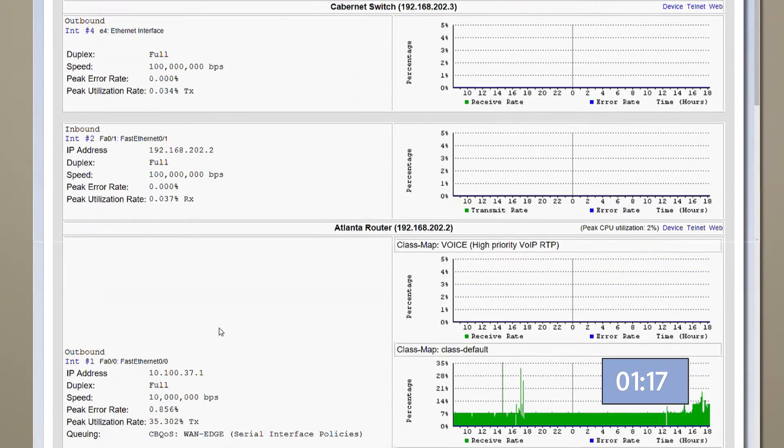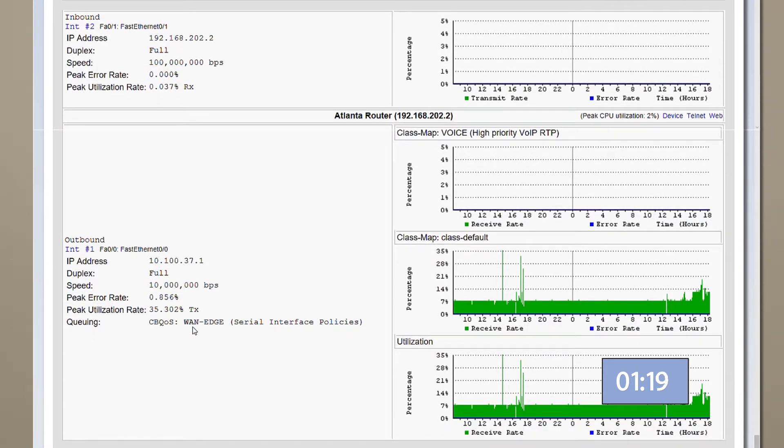Let's look at the Atlanta MPLS router. It looks like the outbound interface has two QoS queues configured. A VoIP queue and a default queue. The problem is that the VoIP queue has no traffic at all, so all the VoIP tag traffic is dropping into the default queue. That's bad. Let's find out why.